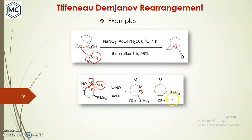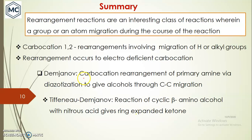In summary: rearrangement reactions are an interesting class of reactions wherein a group or atom migrates during the course of a reaction. Carbocation 1,2-rearrangement involves hydrogen or alkyl group migration, and rearrangement usually occurs to electron-deficient carbon or nitrogen. The Demjanov rearrangement is a carbocation rearrangement of a primary amine via diazotization giving an alcohol through carbon-carbon migration; the Schiemann-Demjanov rearrangement uses a cyclic beta-amino alcohol with nitrous acid to give a ring-expanded ketone. Thank you for watching.